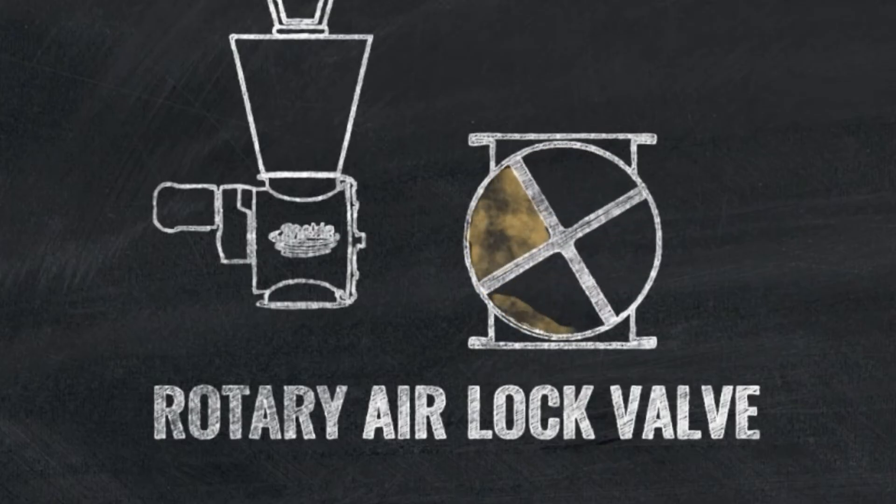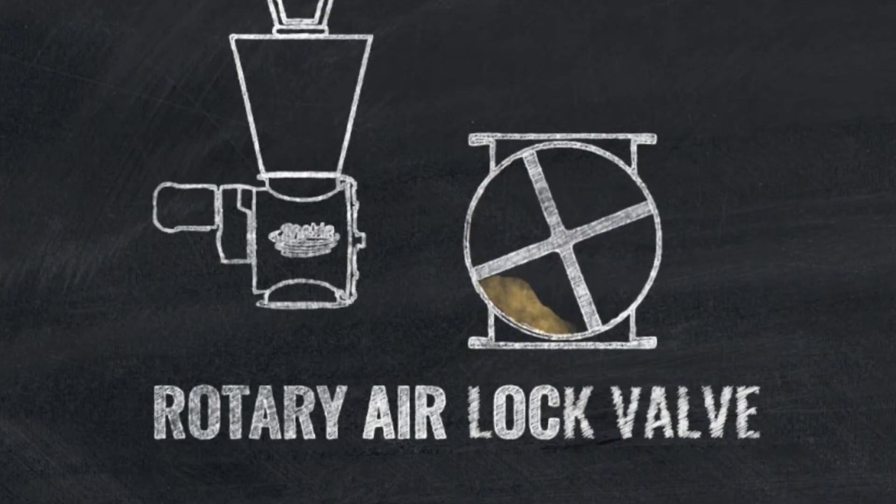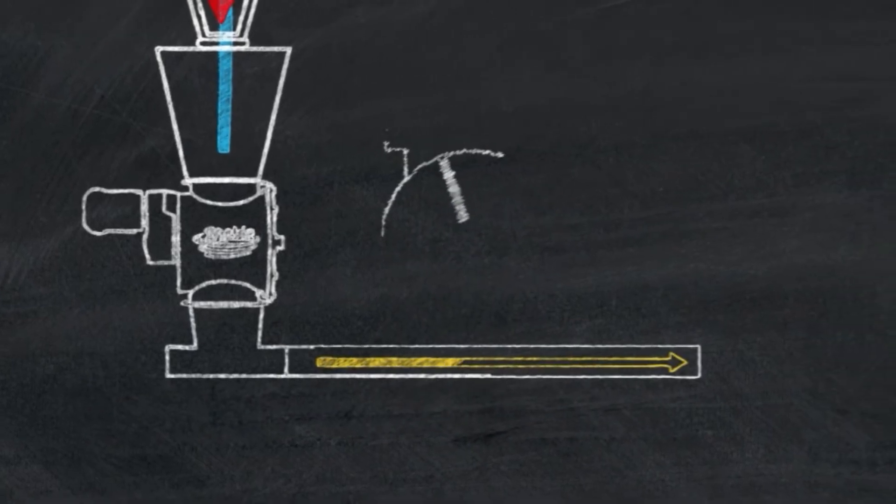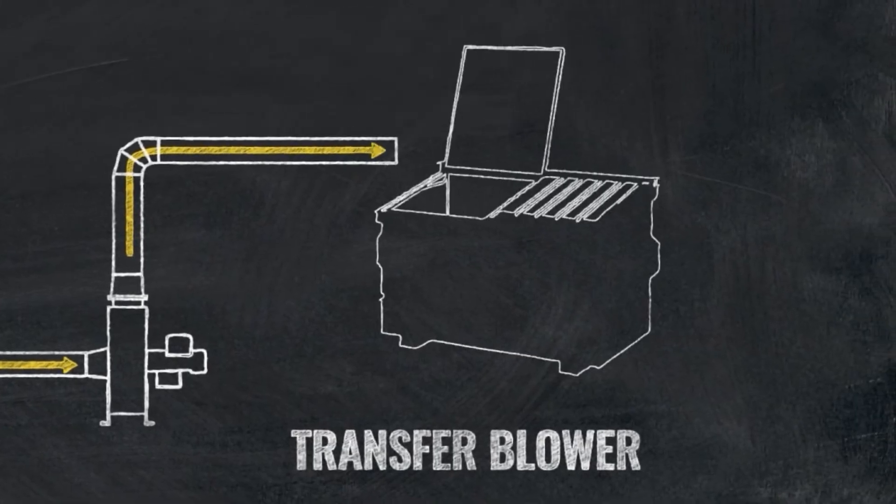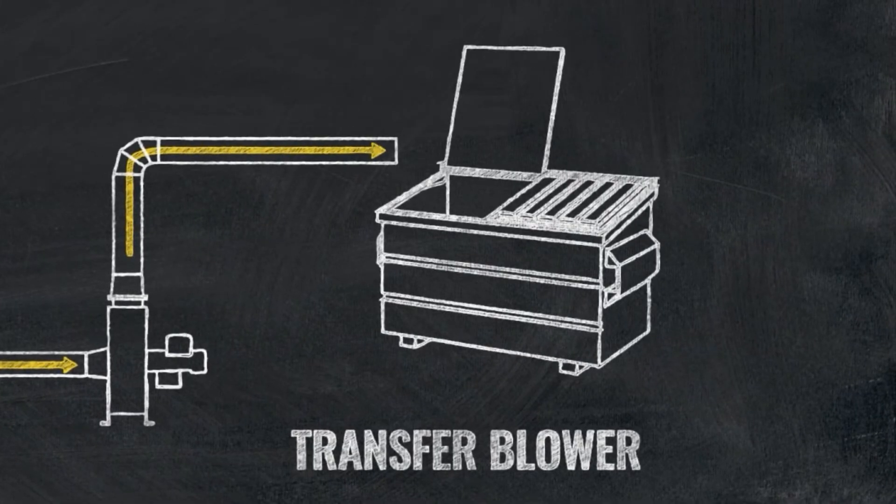Think of it like a revolving door for the dust emptying below. The dust can be dumped into an open container below, or it can be redirected to a transfer blower. This pneumatic conveyance system moves dust away from the cyclone into any location you choose.